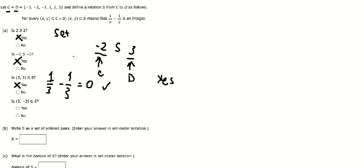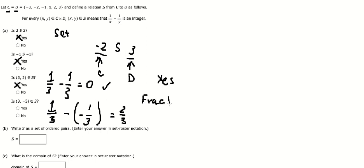Now if I put number three and negative number three in here, we can see that this one gives two over three, and that is a fraction. The fraction is not the same as an integer, so that is no. The next one, we need to write H as a set of ordered pairs.